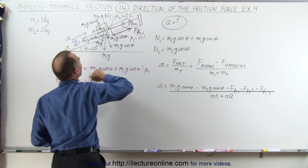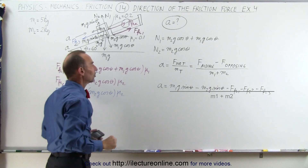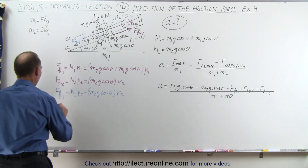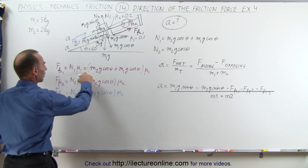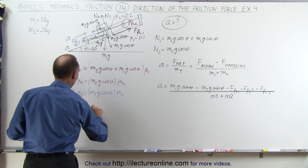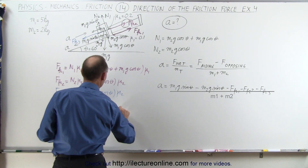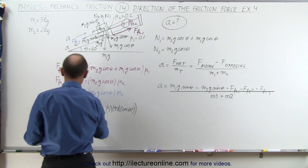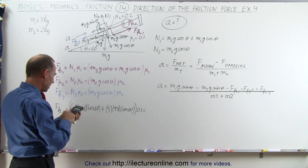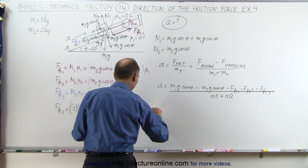All three friction forces are opposing the acceleration — force friction one and two are in the opposite direction of the acceleration of m1, and force friction three is in the opposite direction of the acceleration of m2. Now we'll calculate the three friction forces separately. Force friction one equals m2 (which is 2 kilograms) times g (9.8) times the cosine of 60 degrees, plus m1 (5 kilograms) times 9.8 times the cosine of 60 degrees, multiplied times mu1 (0.1). So we have 7 times 9.8 times 0.5 times 0.1, which equals 3.43 newtons.